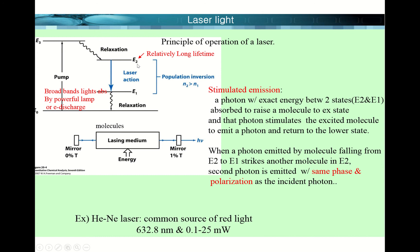There is another electronic energy level E2, and electrons accumulate there. There is also energy level E1. By pumping electrons to E3 and allowing relaxation to E2, there will be population inversion — the number of electrons in E2 is much larger than in E1. Electrons in E2 have a relatively long lifetime. That condition is called population inversion.